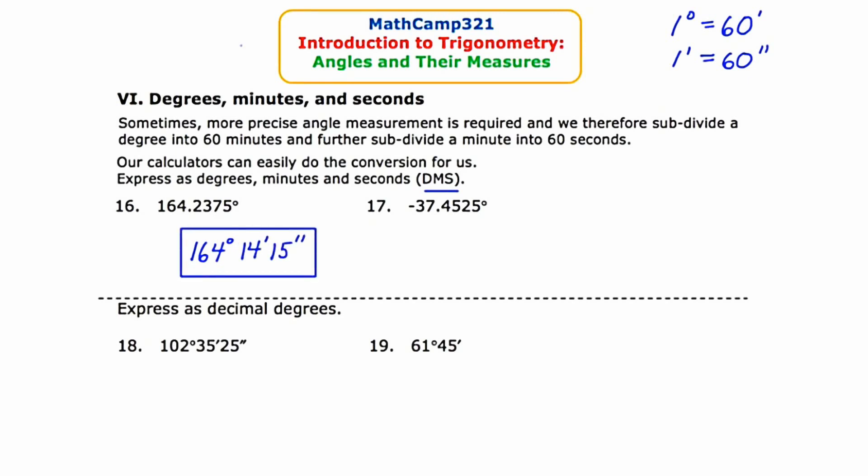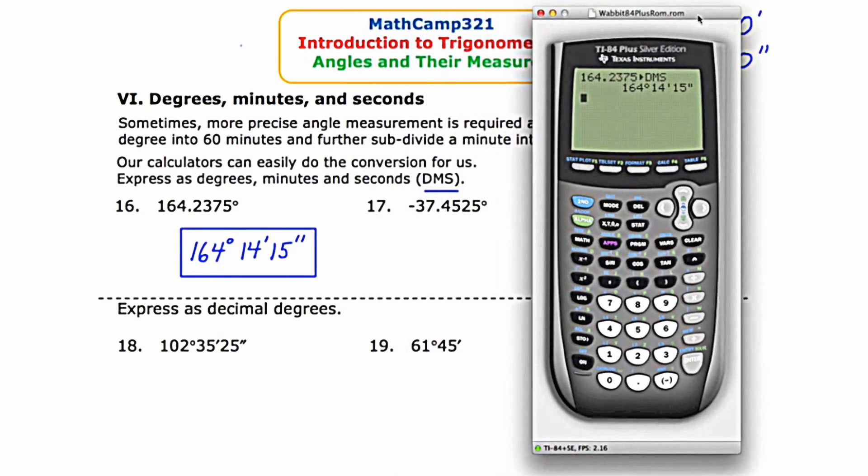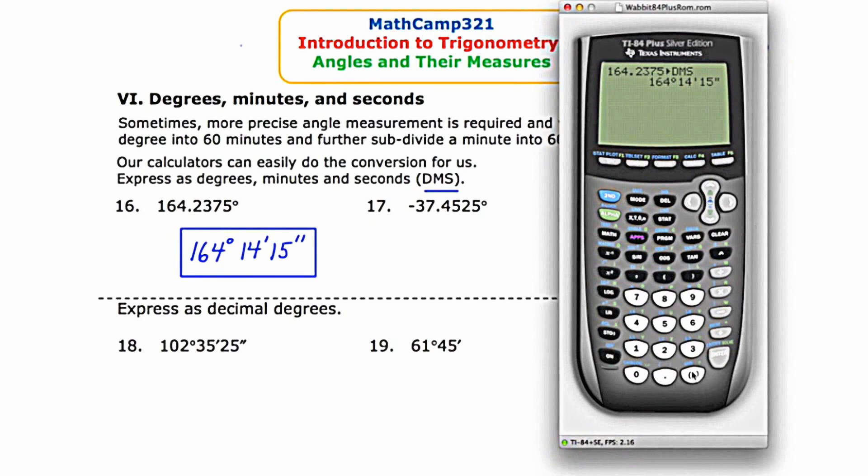Now let's go to number 17, where we're asked to convert negative 37.4525 to degrees, minutes, and seconds. I'll queue up the calculator—negative 37.4525. Queue up that angle menu, which is second, apps, go to option four, and then press enter.